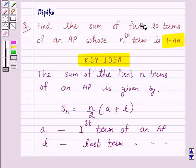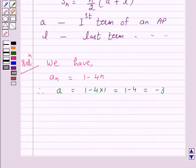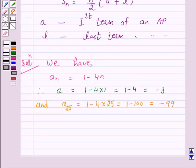Now we have to find the sum of first 25 terms of an AP. So the 25th term is the last term of the given AP. So the 25th term of an AP is equal to 1 minus 4 into 25.